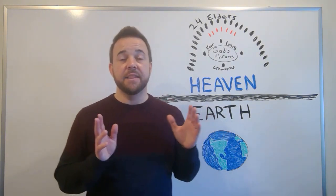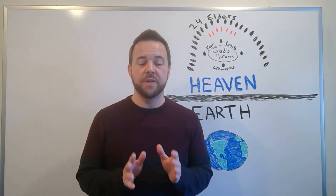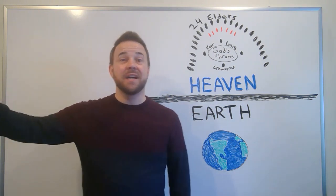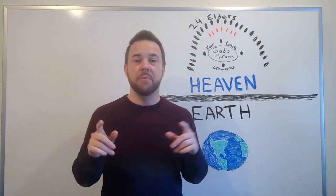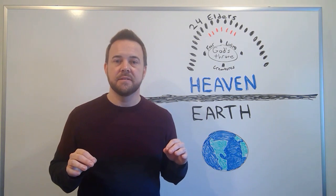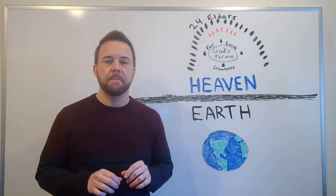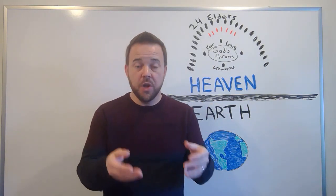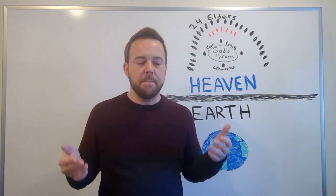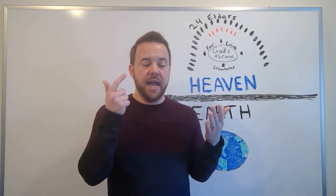Then at the beginning of chapter eight, the Lamb opens the seventh seal. And with all these calamities that have accompanied the opening of each previous seal, we expect this to be the end. Like this is it. Okay, the final one is open. This is going to be it. But instead, there is silence. Absolute silence in heaven for about half an hour, it says. Trumpets are handed out to seven angels who in Jewish tradition were the seven archangels who served as God's messengers to the earth. Uriel, Raphael, Raguel, Michael, Sariel, Gabriel, and Remiel. Seven angels, seven messengers of God to the earth.